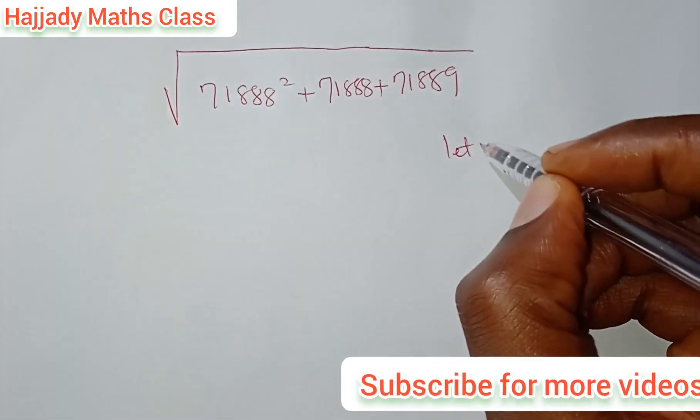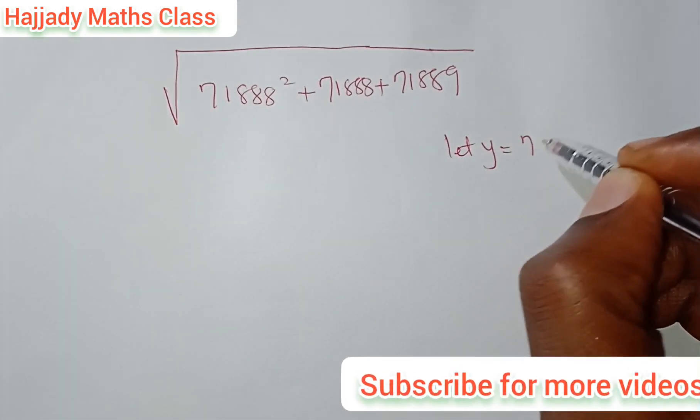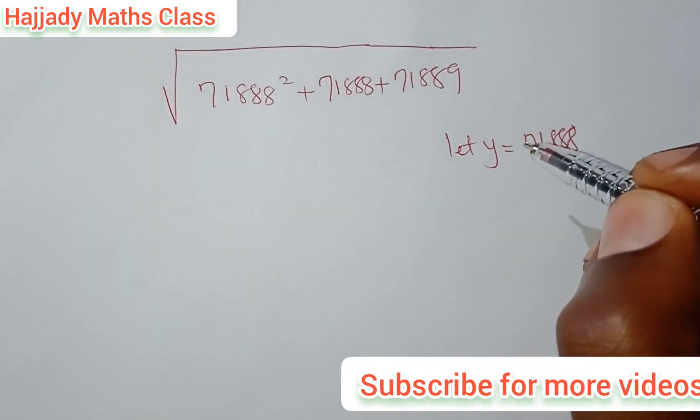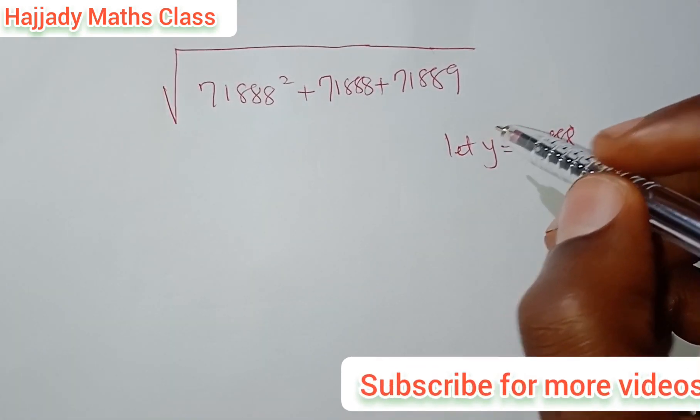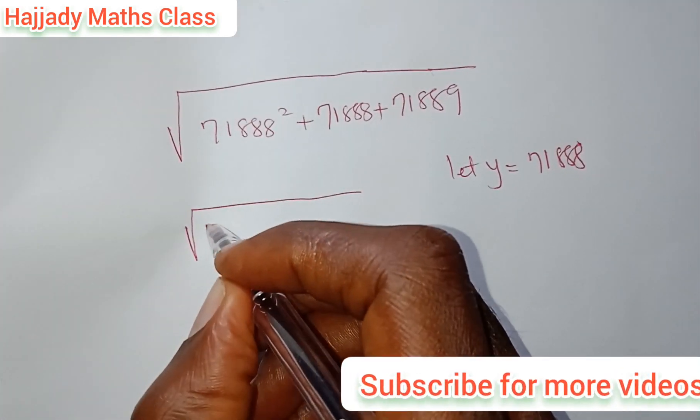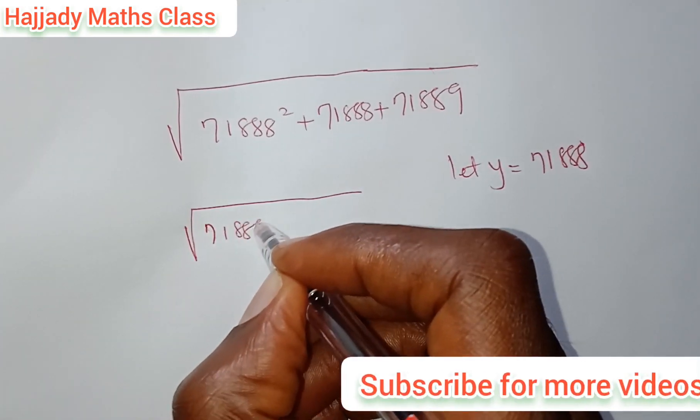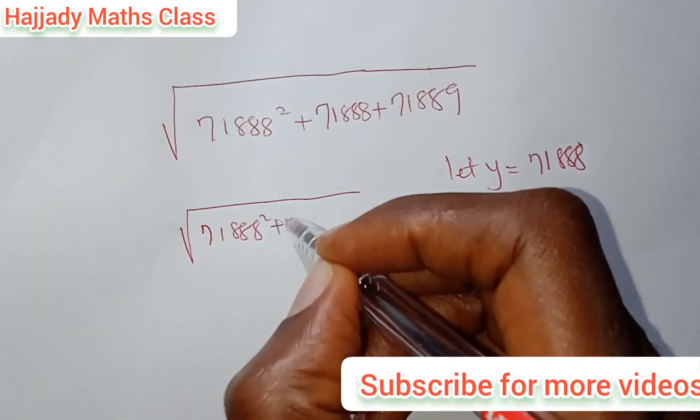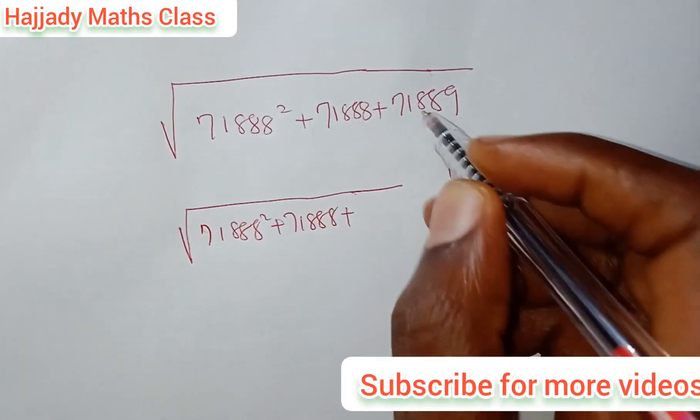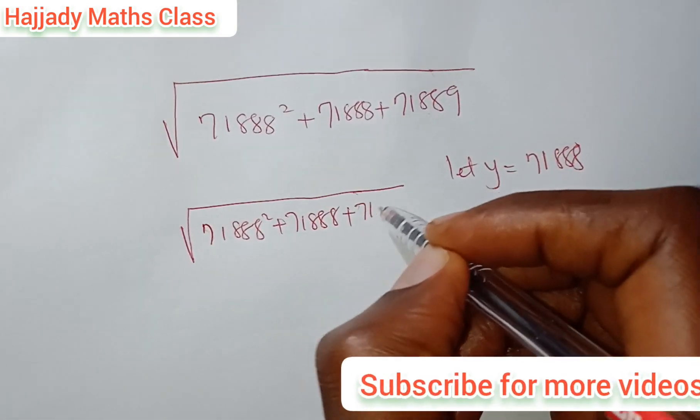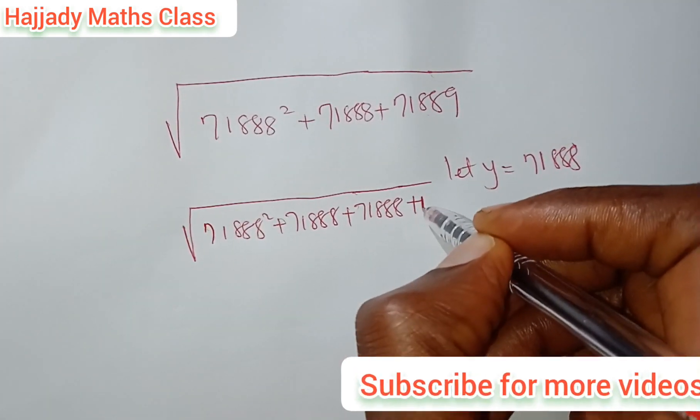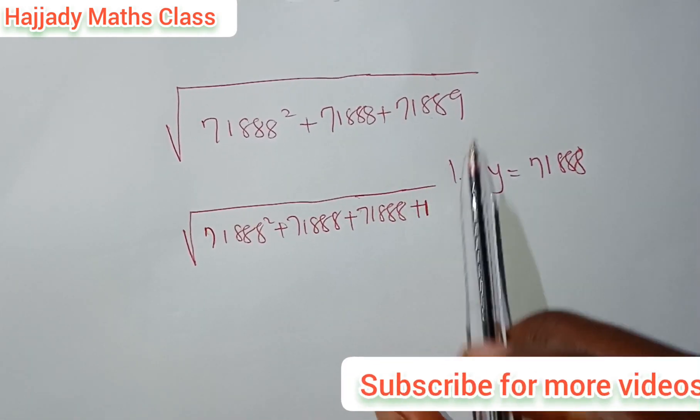let y be equal to 71888. And prior to that, we can say that we have 71888 squared plus 71888 plus, this can be split as 71888 plus 1. If 1 is added to this, we get this back.